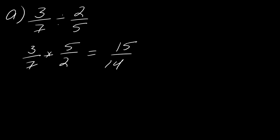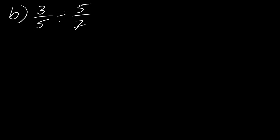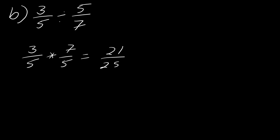What about example B? Maybe you want to pause the video and give it a try, then hit play when you're ready. So I'm going to have 3 over 5 times 7 over 5, which becomes 21 over 25. And so that's good to go.